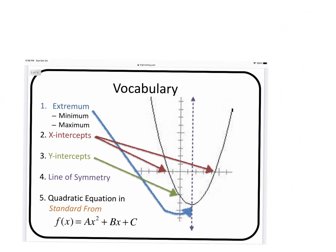Now looking at our vocabulary — just to be perfectly clear — this part right here is the parabola. It looks like a u-shape function, like a smiley face. Parabolas can also be upside down, but we're not looking at that in this particular example.